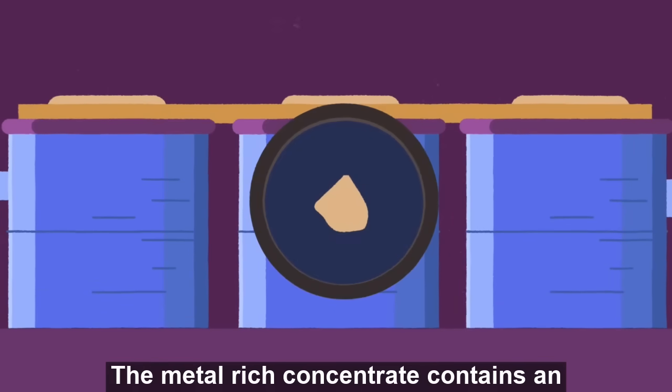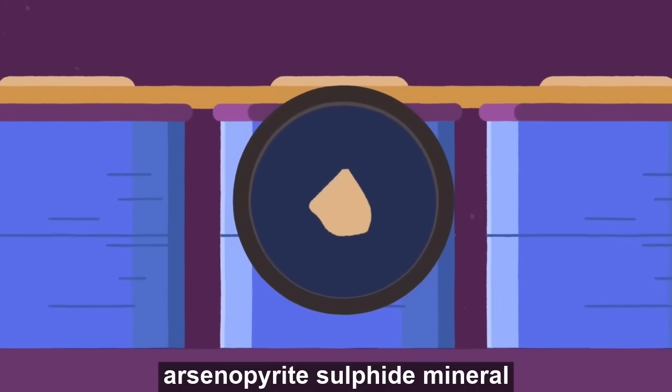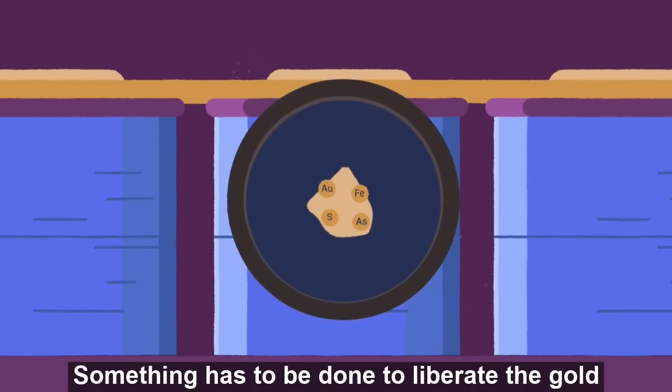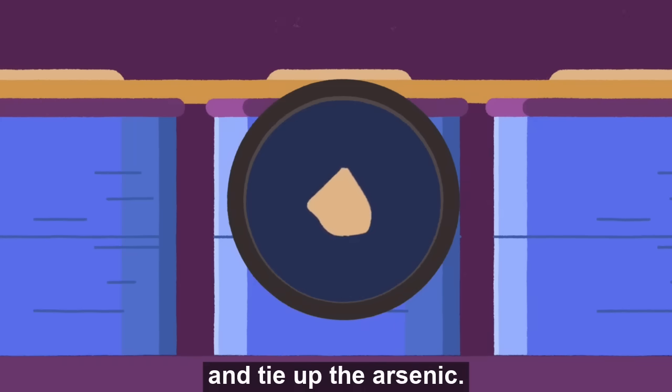The metal rich concentrate contains an arsenopyrite sulfide mineral that is made up of gold, arsenic, iron, and sulfur. Something has to be done to liberate the gold and tie up the arsenic.